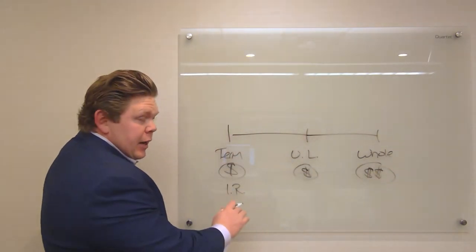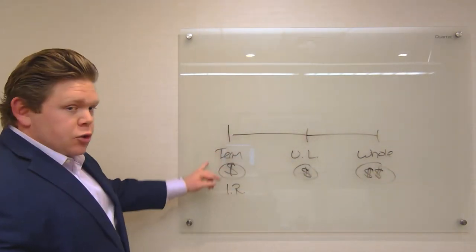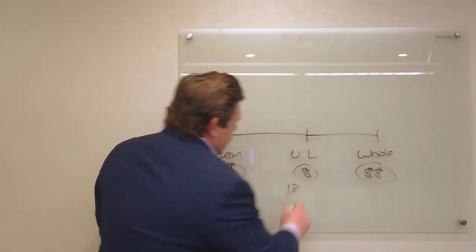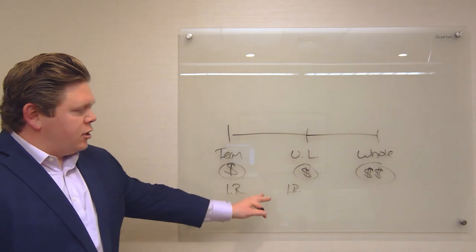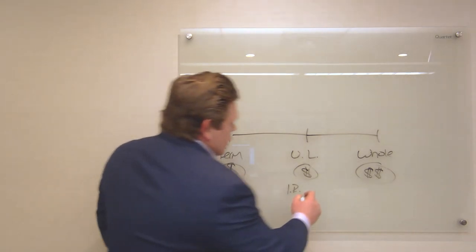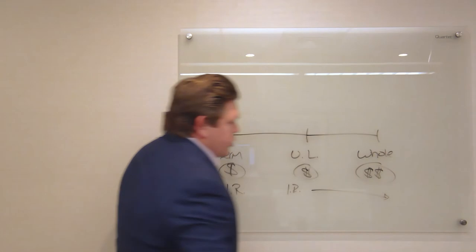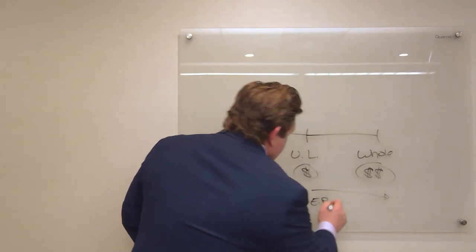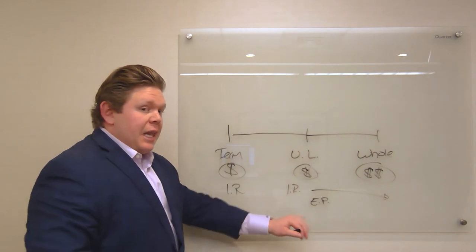Now over the course here at the bottom part of the spectrum, we really focused on term as income replacement. You could have a universal life policy that is going to be used for income replacement as well, but really from here going forward we're talking more about estate planning. So I'm just talking about EP there, and then legacy planning.